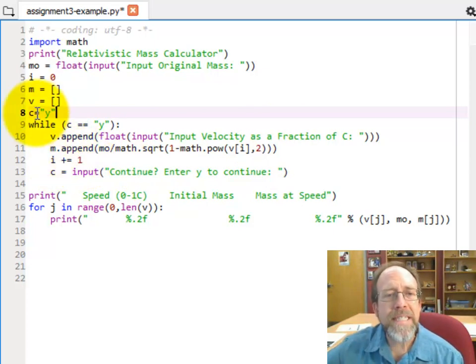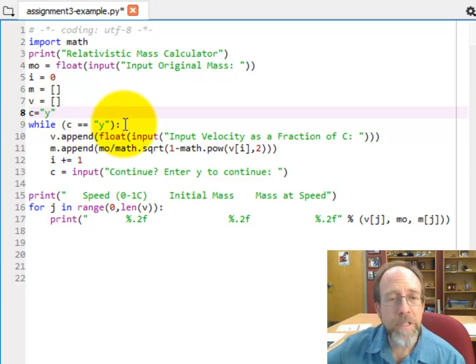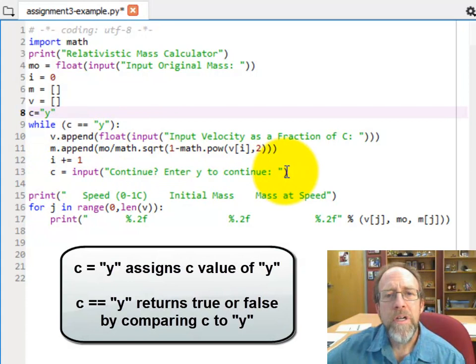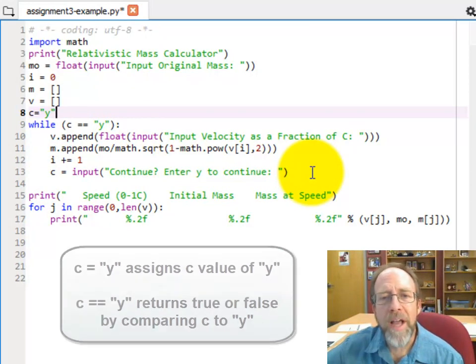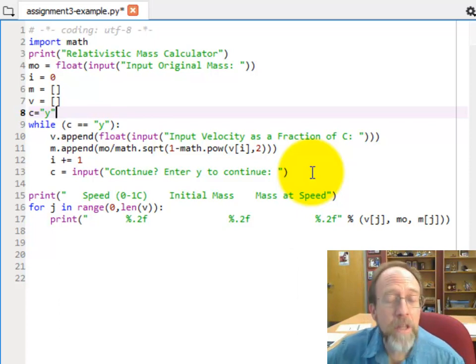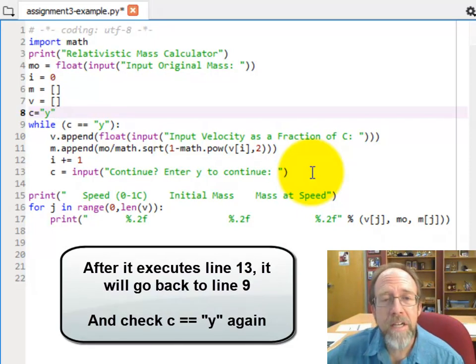Then, remember good old c up here, where c was equal to y? And while c was equal to y, you kept going. Well, now I'm going to ask you to input the c value. And if you input a y, it's going to continue, and it's going to go through the while loop again. If you enter anything other than a y, and a lowercase y at that, it's going to jump out and go to the next line.